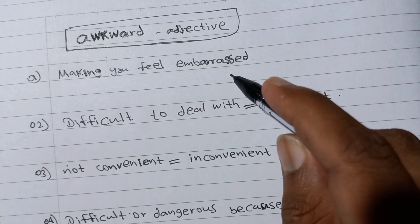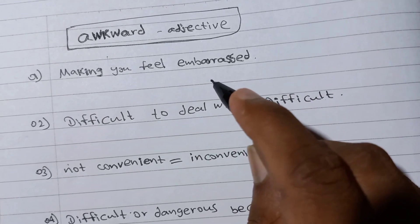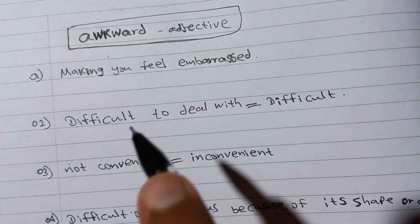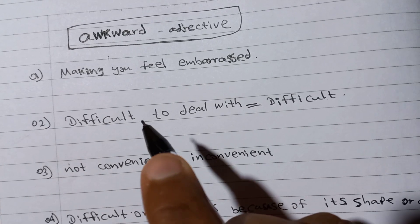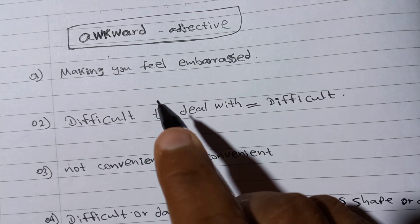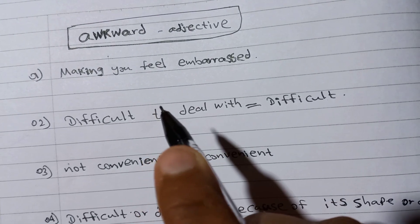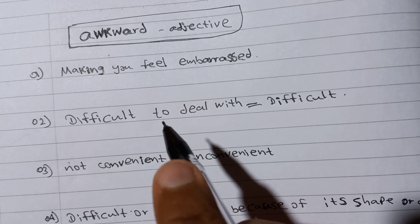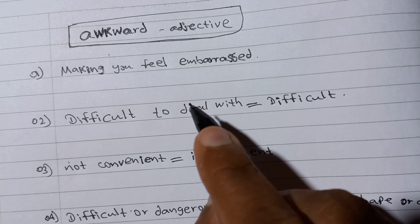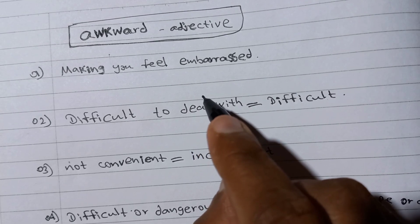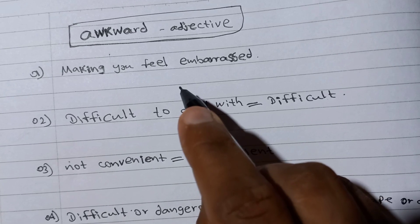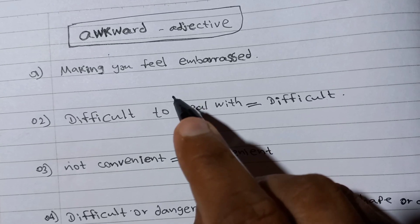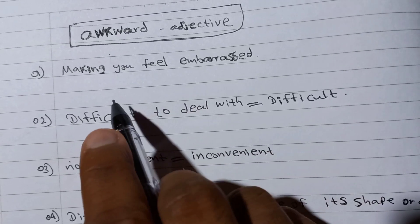As an example: there was an awkward silence when I went into the classroom. Because the silence made me feel embarrassed, that's why we can say there was an awkward silence. It means there was a silence that made me feel embarrassed. That is the first example.